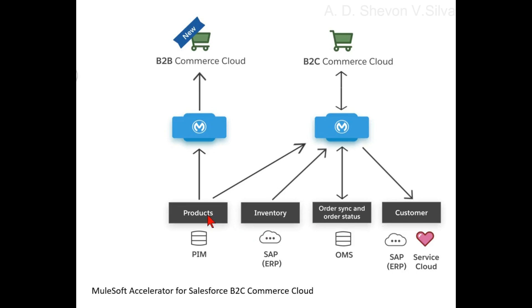Here you can see products and PIM — PIM and products are connected to MuleSoft, and also connected to B2B Commerce Cloud and B2C Commerce Cloud. Here you can see SAP ERP on the inventory side, and OMS handling order sync and order status.